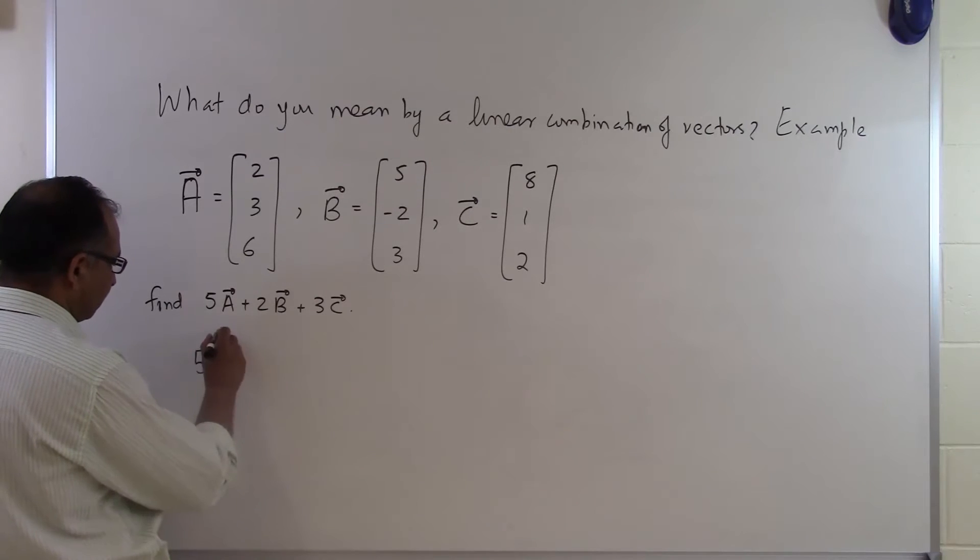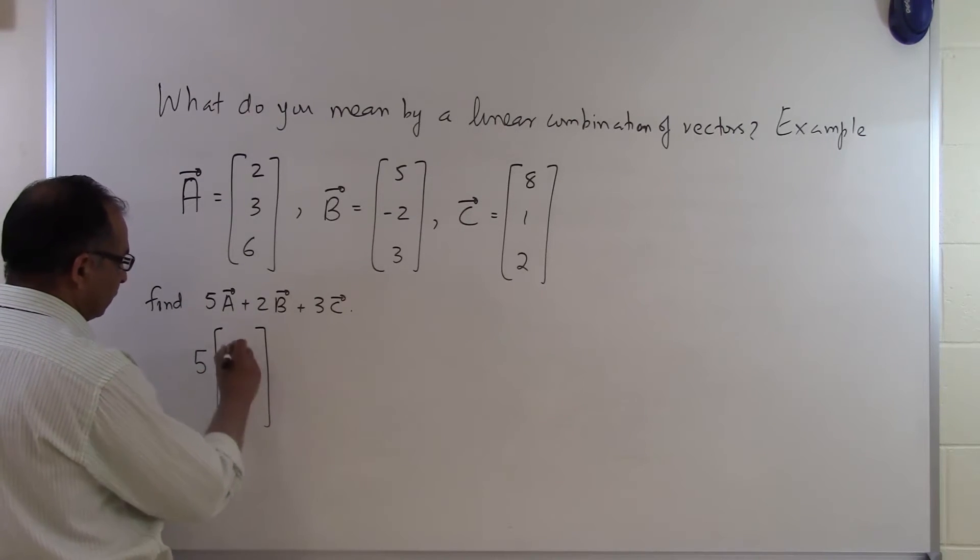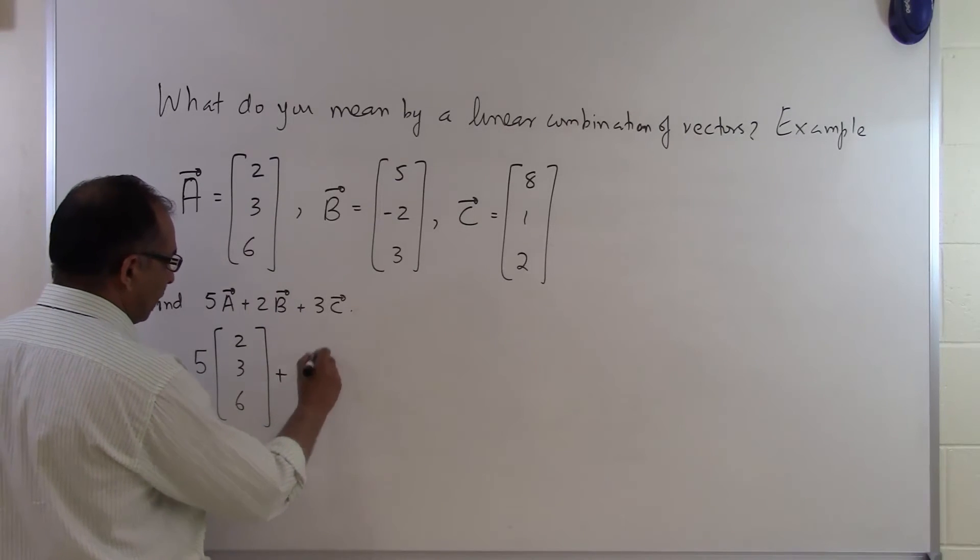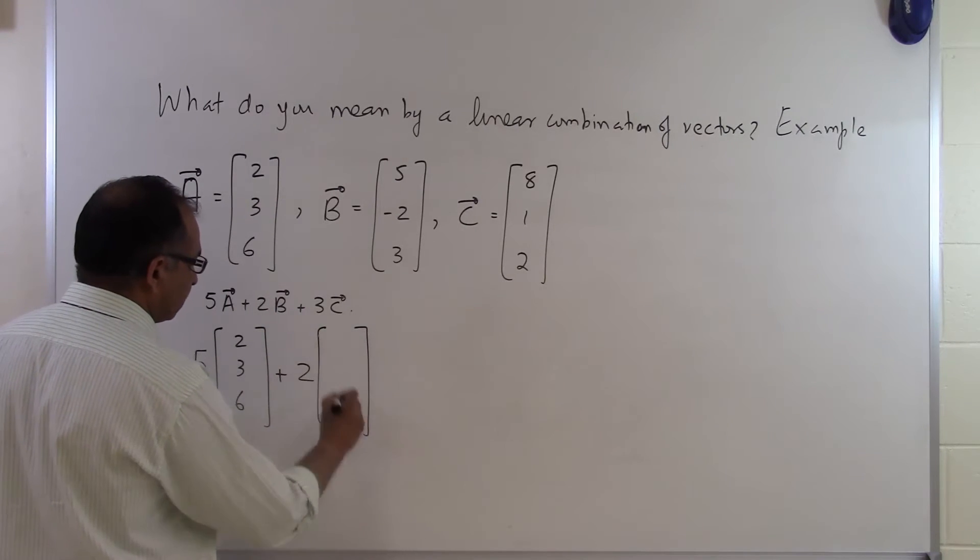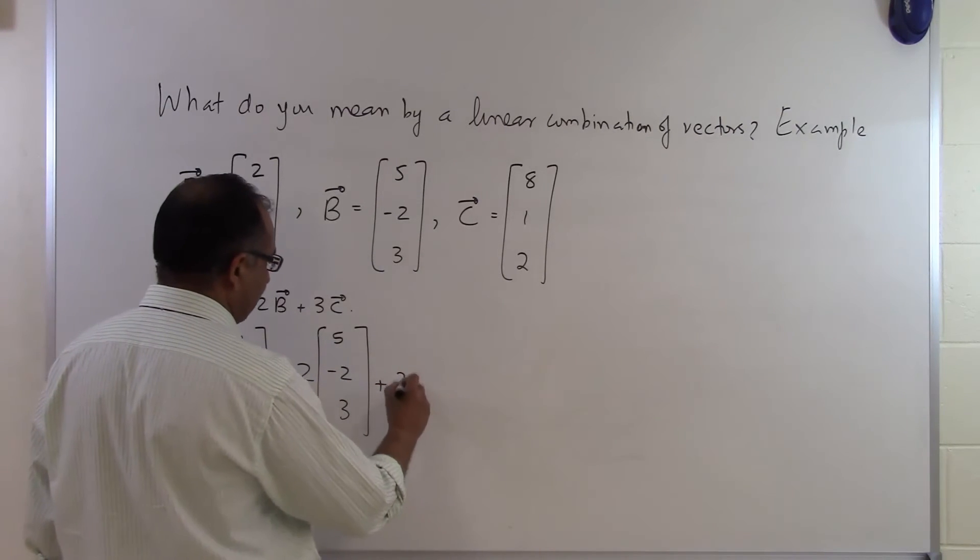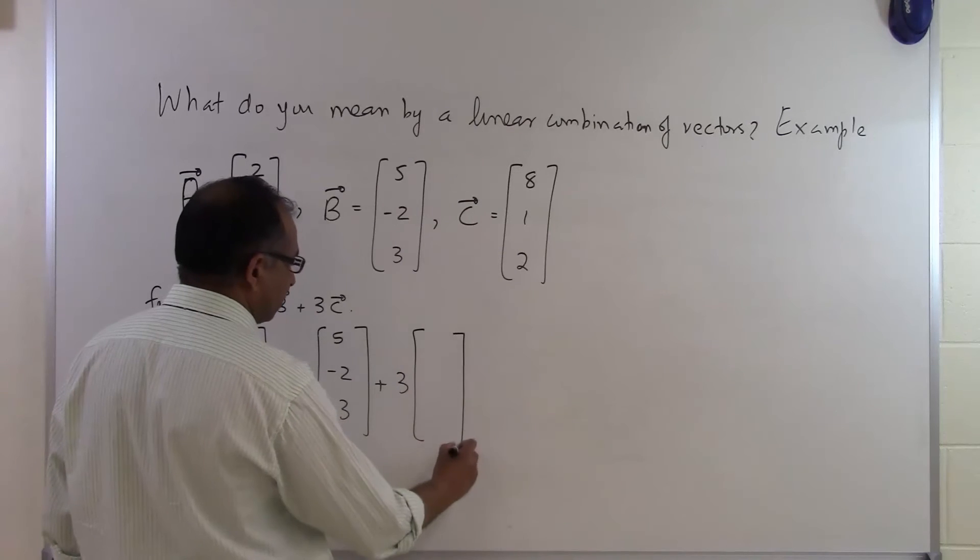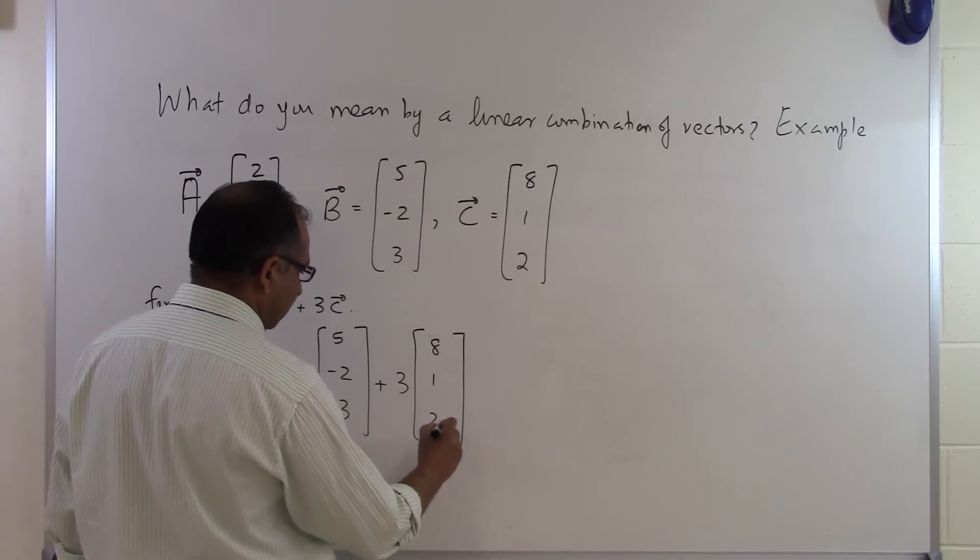So all you're doing is 5 times A vector which is 2, 3 and 6. Then 2 times the B vector which is 5, minus 2, 3 plus 3 times the C vector which is 8, 1 and 2.